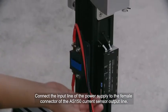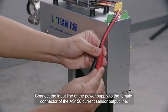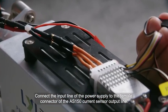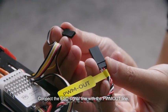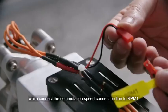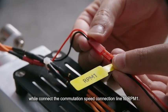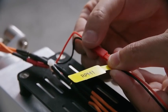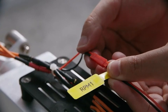Connect the input line of the power supply to the female connector of the AS150 current sensor output line. Connect the ESC signal line with the PWM outline while connecting the commutation speed connection line to revolutions per minute one. Installation of propellers after ESC calibration and motor trial run.